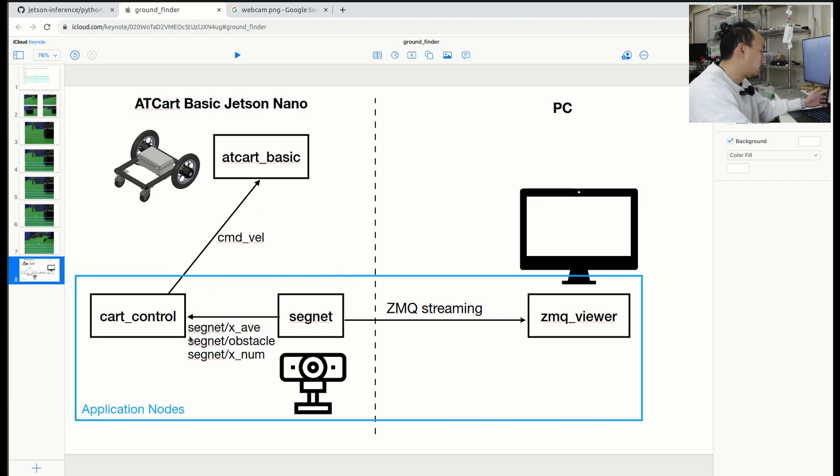It's going to subscribe to the segnet topic from the segnet node. The segnet node is going to open the camera and then grab the frame and do some segmentation and then output this topic to the cart control.